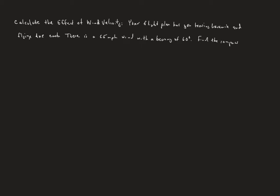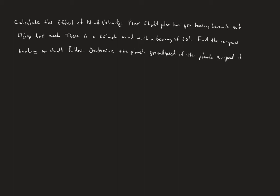We need to find the compass heading we should follow, and we're going to determine the plane's ground speed — I'll talk about what that means in a moment. The plane's airspeed is 450 miles per hour.